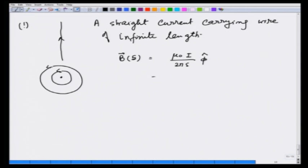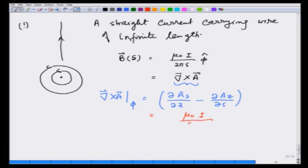This is nothing but curl of A. Since there is a cylindrical symmetry, I will use the definition of curl in terms of cylindrical coordinates. Since I want only the phi component, curl of A phi component is given as partial A_s component z minus partial A_z partial s, and this in our case happens to be equal to mu naught i over 2 pi s.